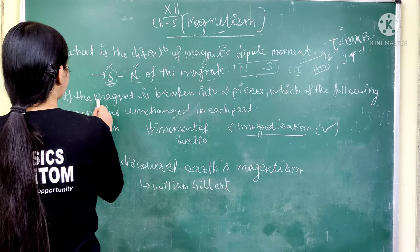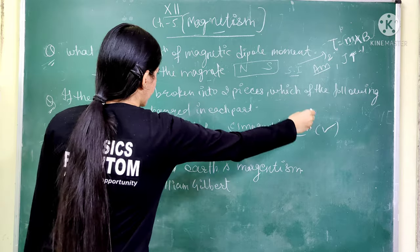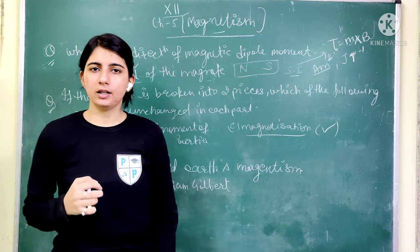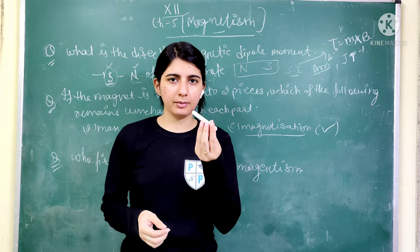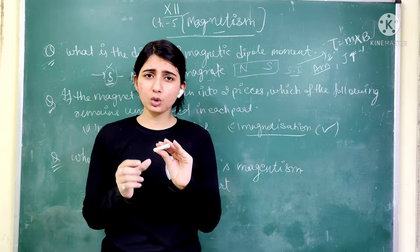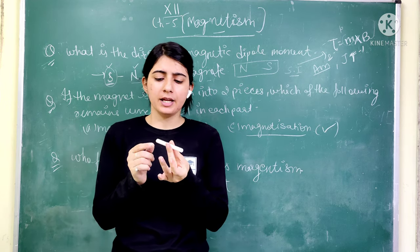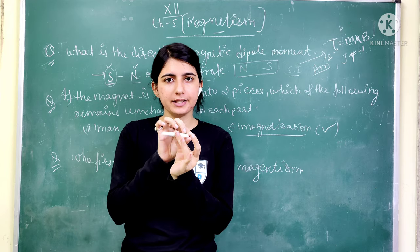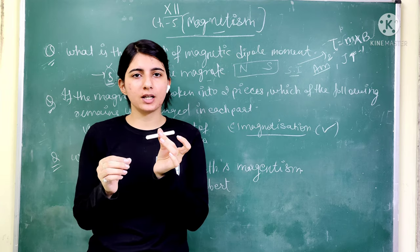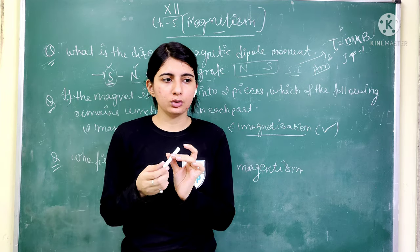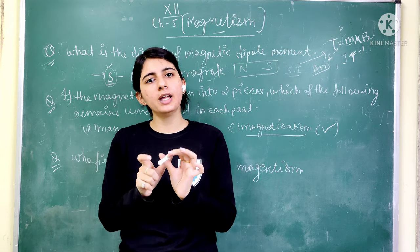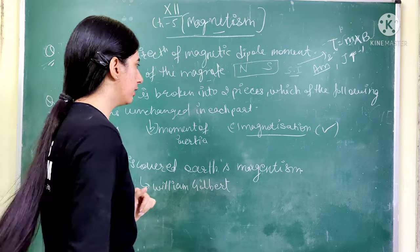The next question is: if the magnet is broken into two pieces, which of the following remains unchanged in each part? If you have a bar magnet with a north pole and a south pole and you break it into two equal parts, you might think one side will have only a south pole and one only a north pole, but that doesn't happen. A magnet always has two poles; if you break it into any number of parts, each part will still have two poles.